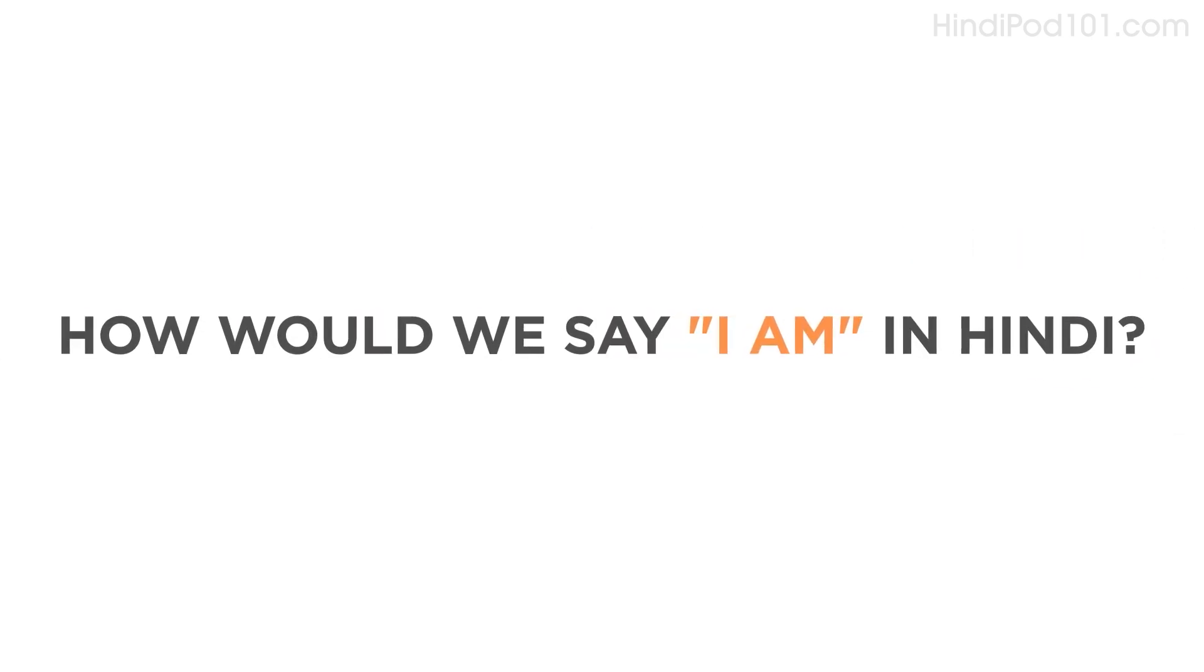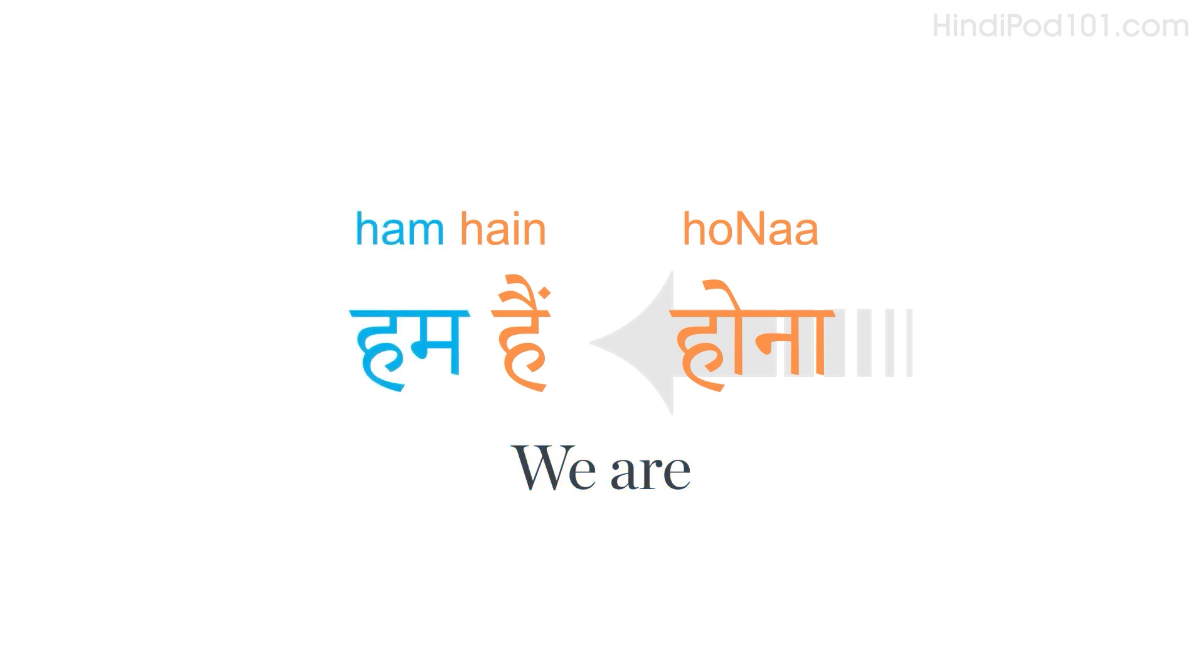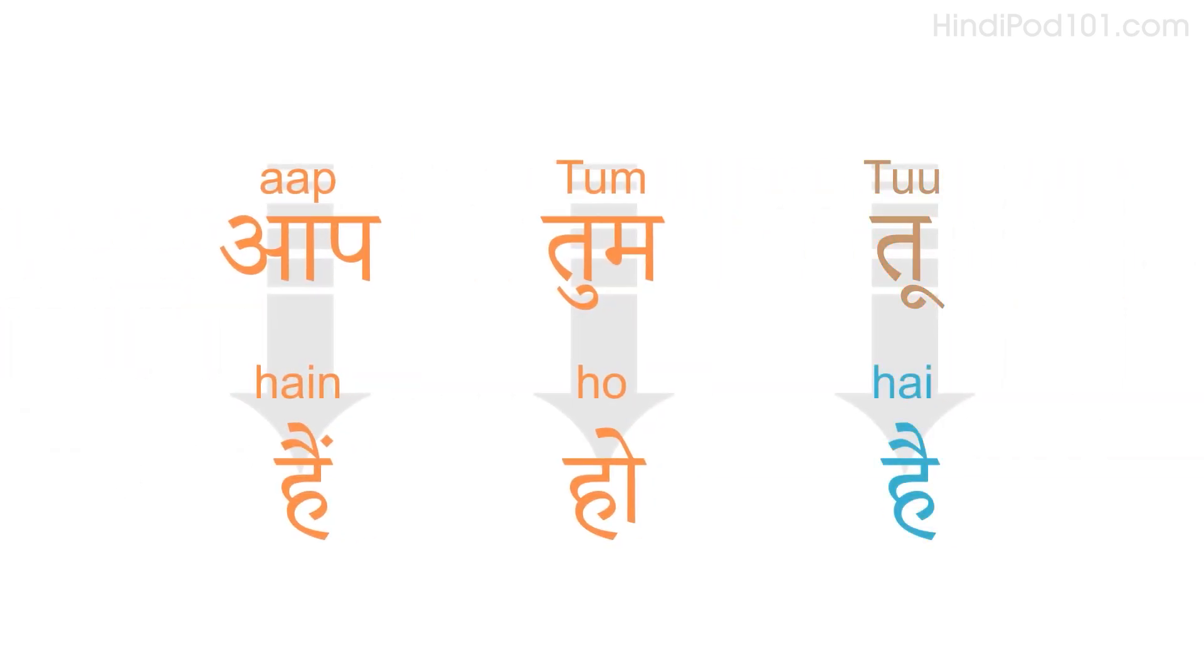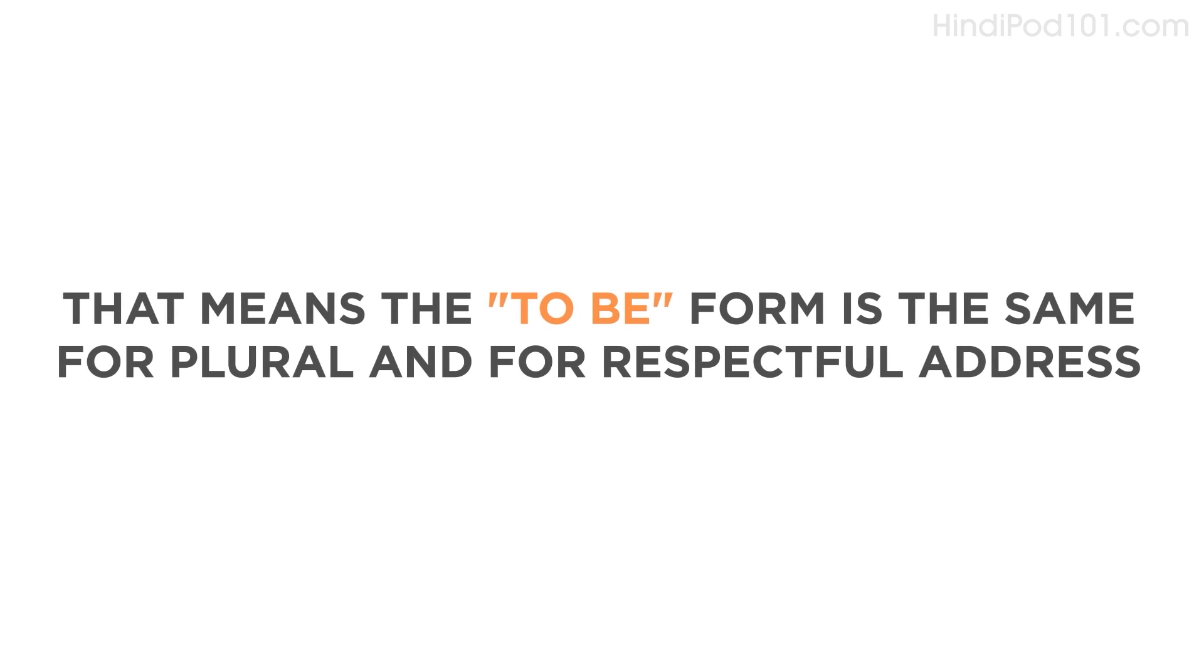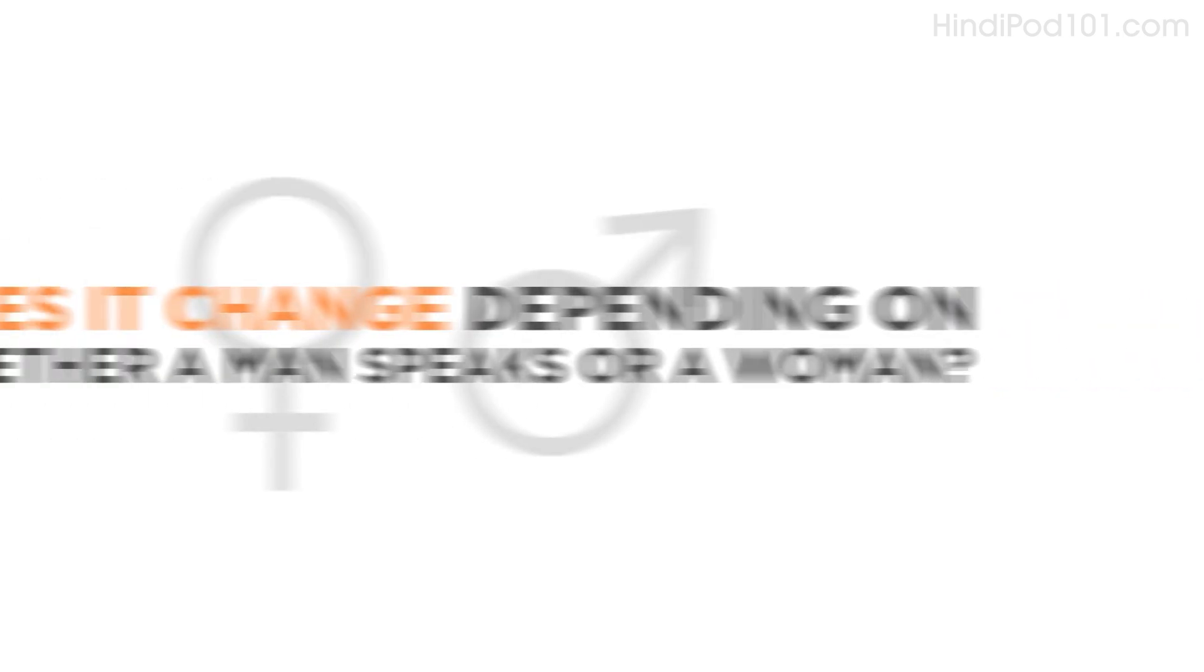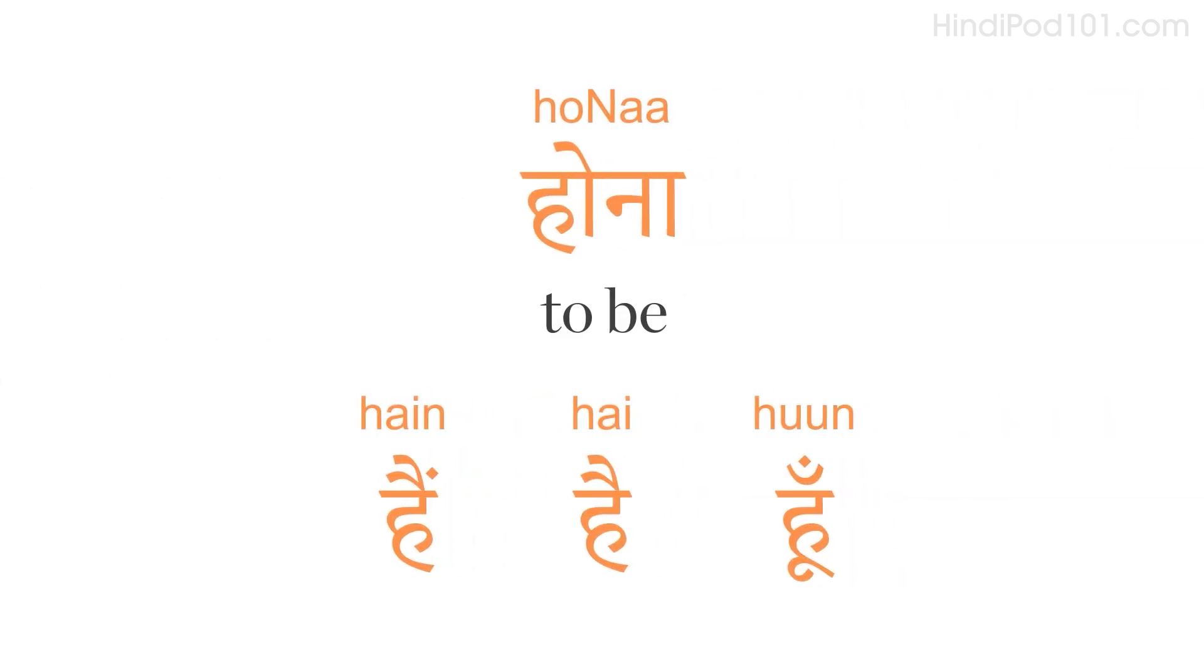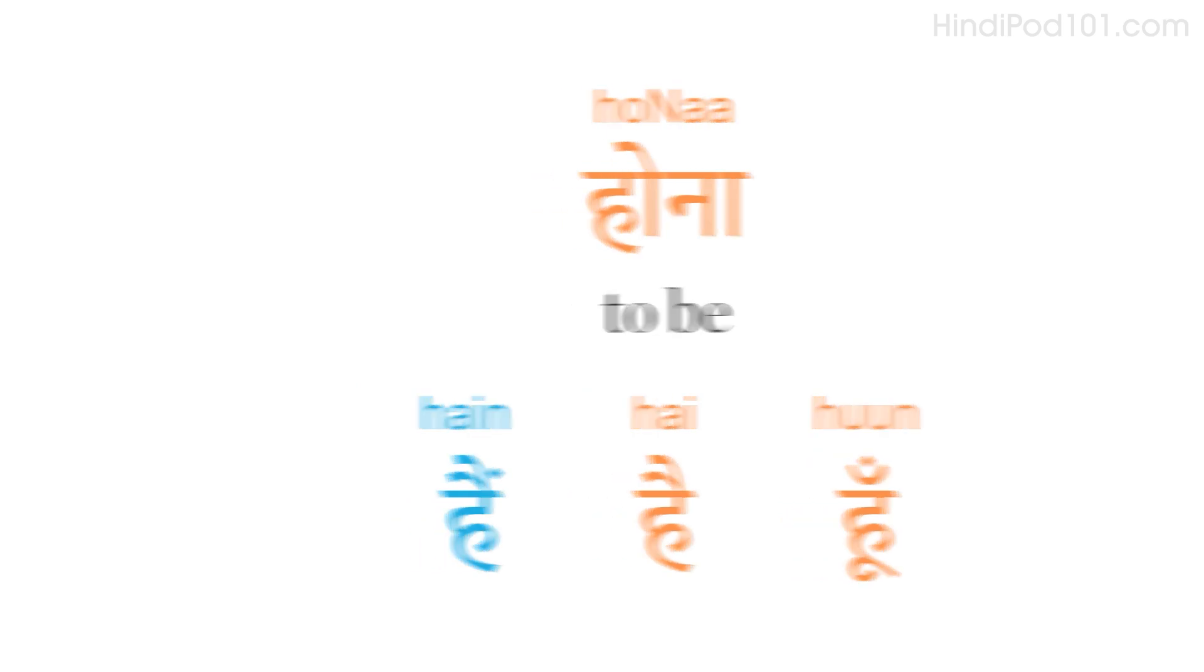How would we say 'I am' in Hindi? For 'I am', 'hona' changes to 'hon', 'main hon'. 'We are' becomes 'hum hain', where 'hona' changes to 'hain'. With 'tum', you use 'ho'. And with 'aap', you use 'hain'. That means the 'to be' form is the same for plural and for respectful address. It is 'hain'. Does it change depending on whether a man speaks or a woman? No, it doesn't. We have three versions of 'hona'. And these are 'hon', 'ho', 'hain'.